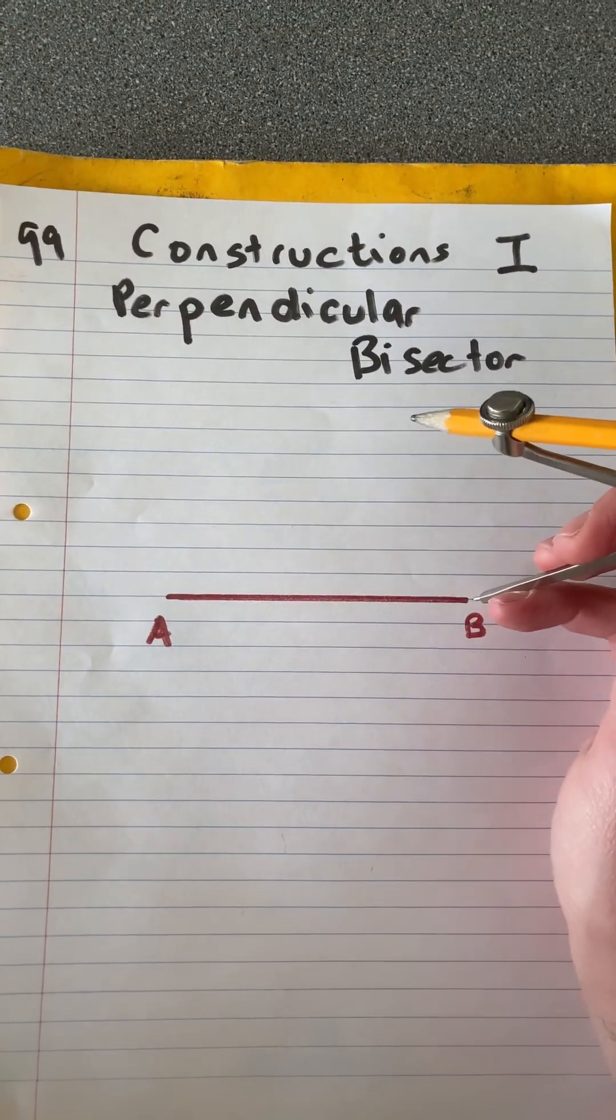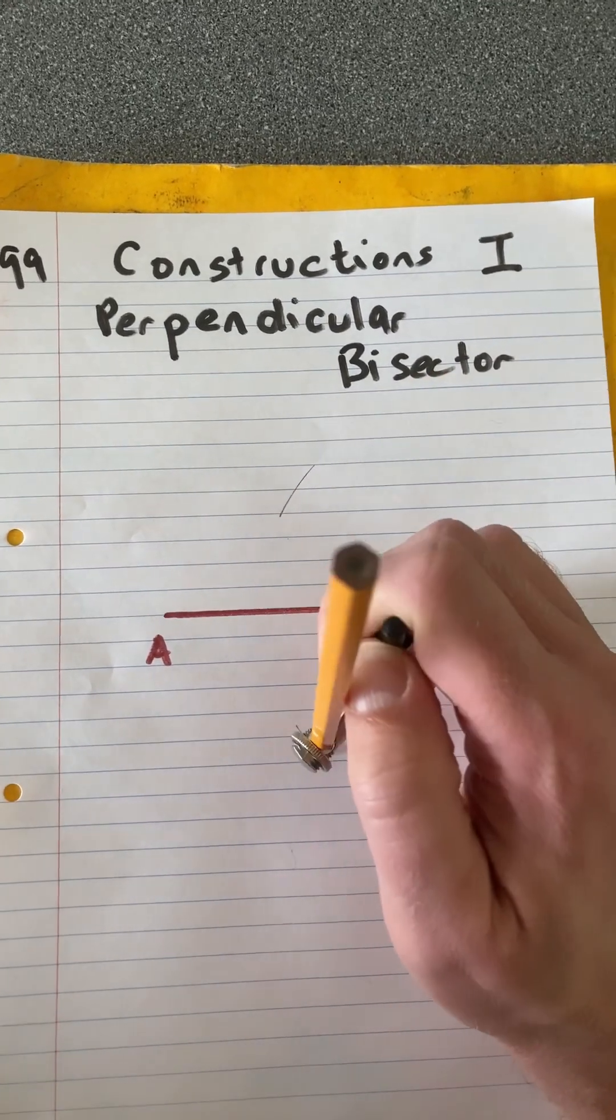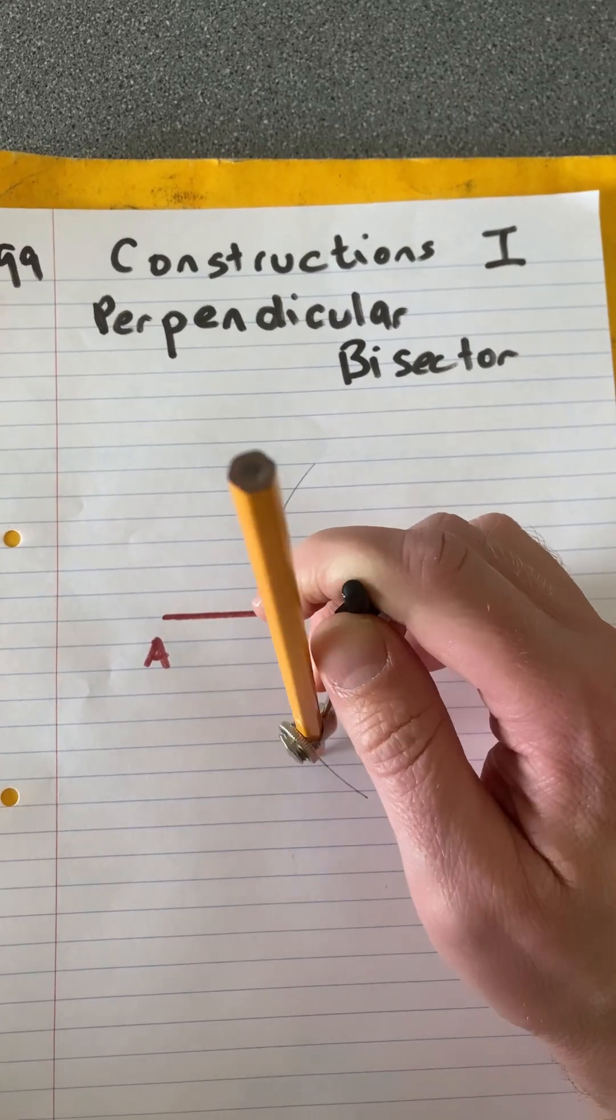So you take the sharp point to either side. I'm going to start with B, and you make an arc above and below. Be generous with how far you go.